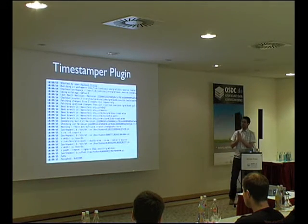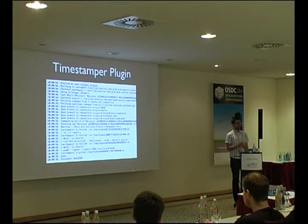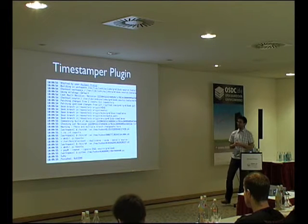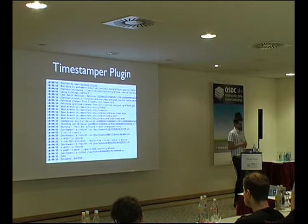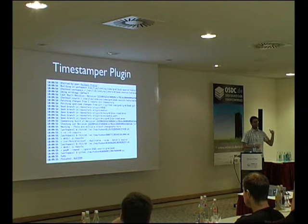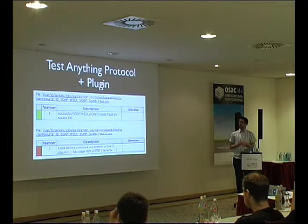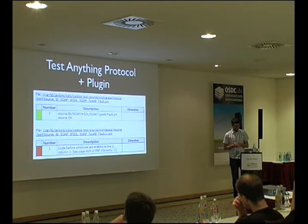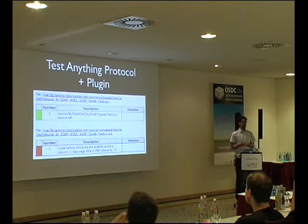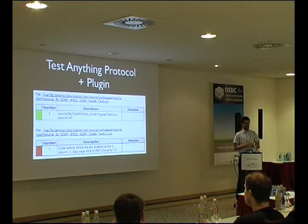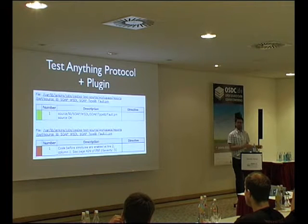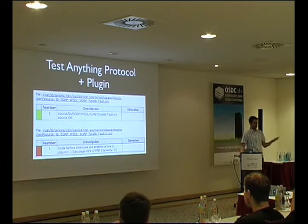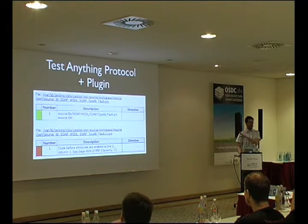Ich kann das Timestamper-Plugin schwer empfehlen: ein klassisches Problem ist, warum dauert der Jenkins-Job so lange? Man sieht den Konsolen-Output, aber weiß nicht, was eigentlich so lange gedauert hat. Das Plugin ist leider nicht standardmäßig installiert, aber leicht zu installieren, und man kriegt auf der linken Seite sichtbar Timestamps, damit man nachvollziehen kann, wo ein Build-Step lang gedauert hat. Genauso empfehlenswert ist das Test-Anything-Protocol-Plugin: JUnit erfüllt nicht alle Anforderungen, gerade aus der Perl-Richtung. Sobald man das Plugin installiert hat, kann man TAP-Reports genauso integrieren wie JUnit-Reports.